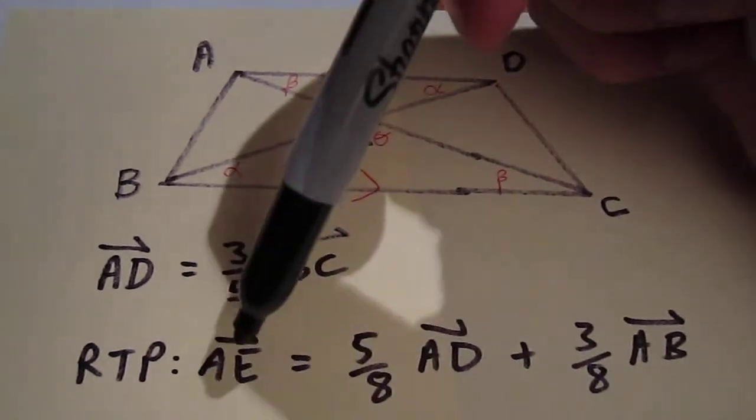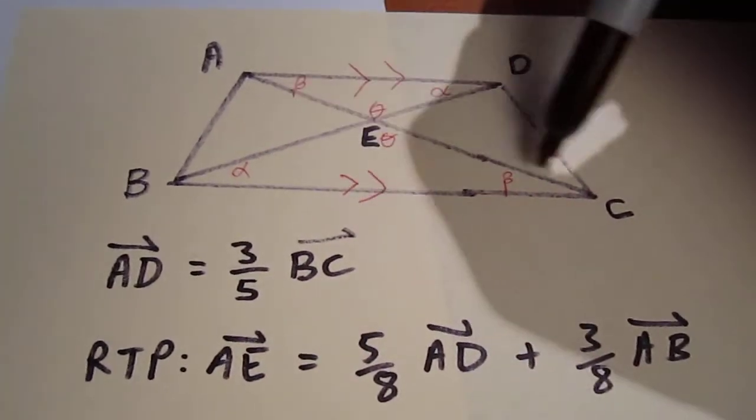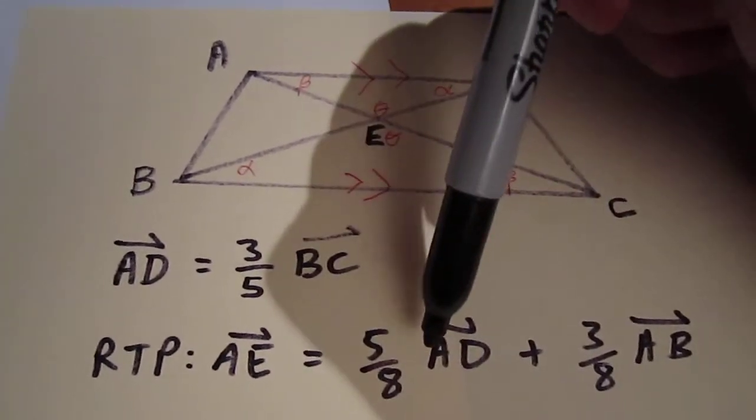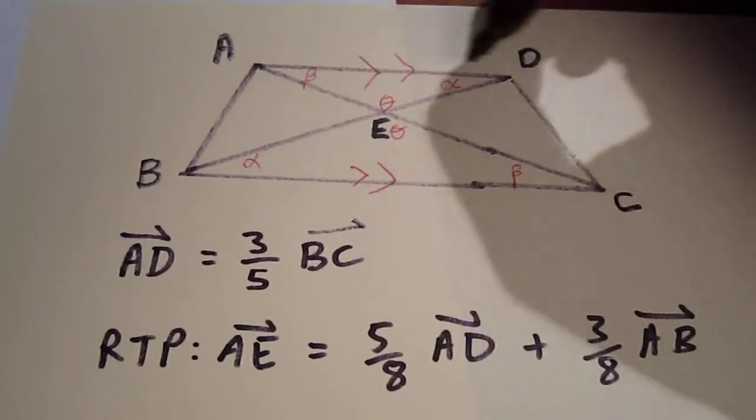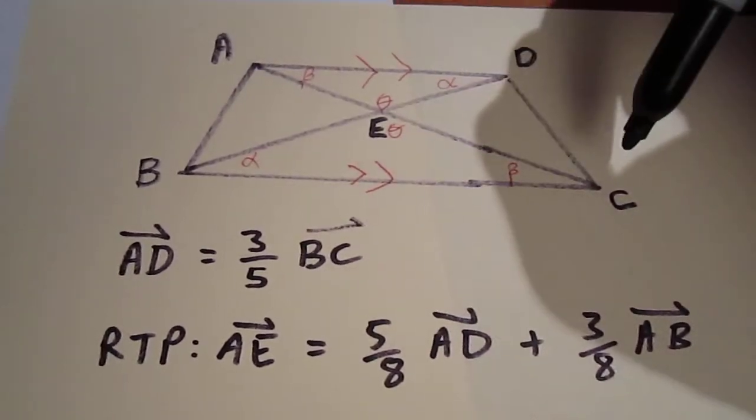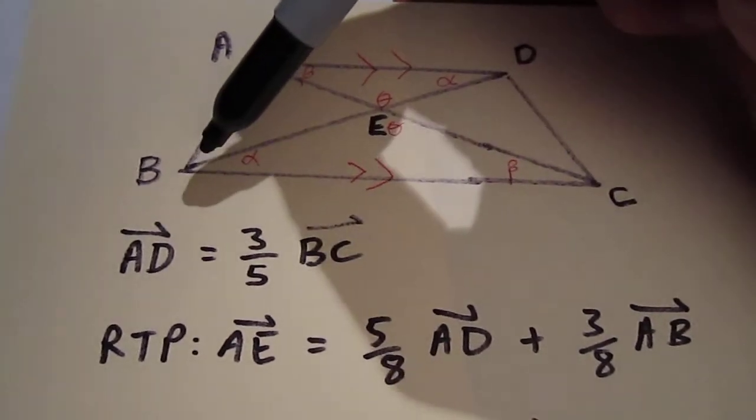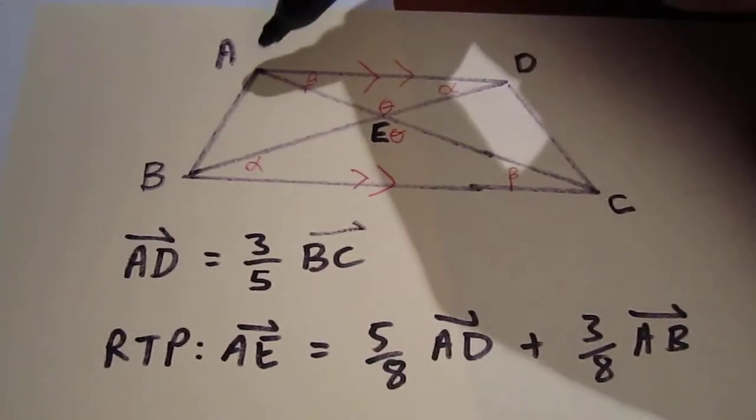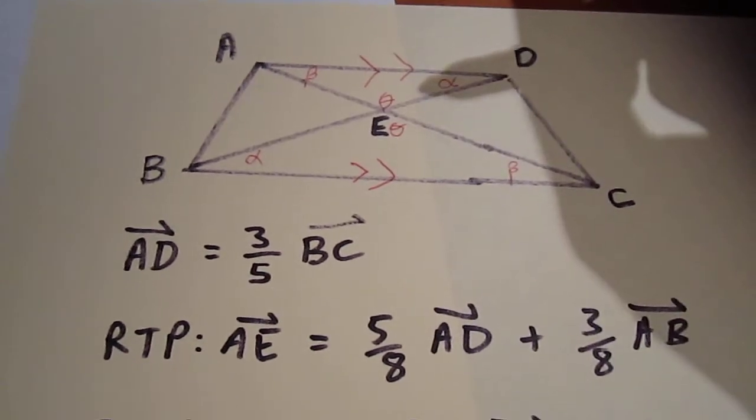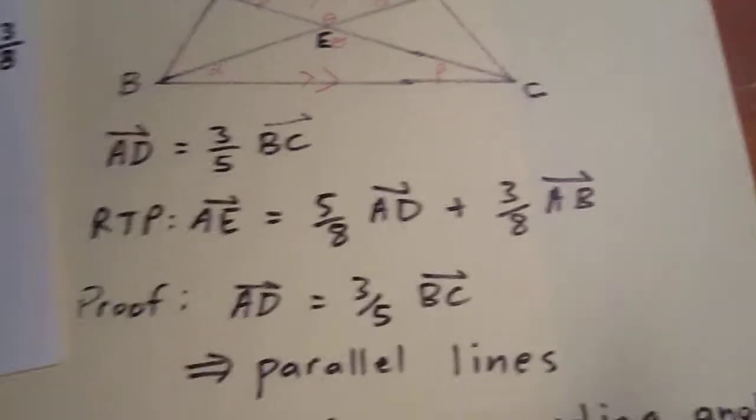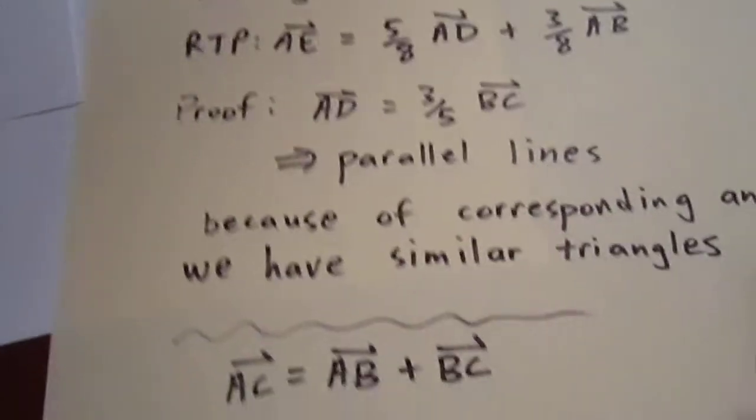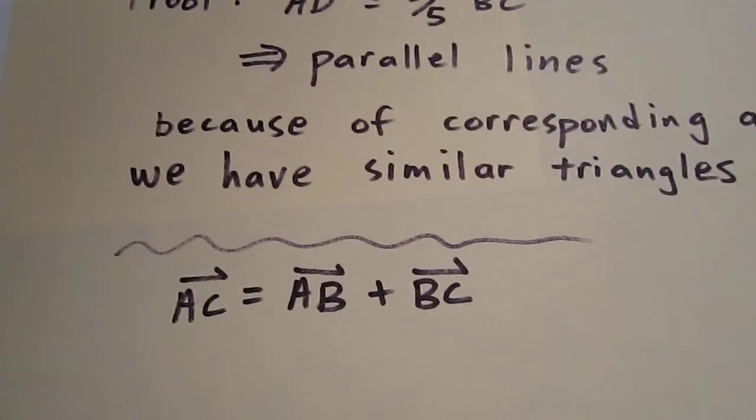So again, AE is in the same direction as AC. 5 eighths AD up here is in the same direction as BC. And 3 eighths AB right here is in the same direction as AB itself. So, I'm going to state that AC is equal to AB plus BC.